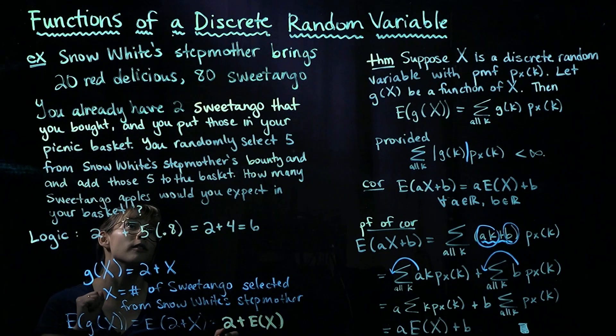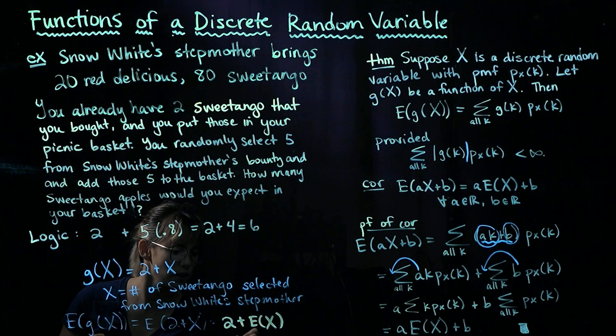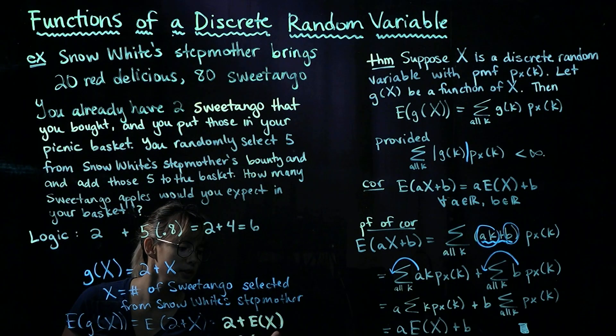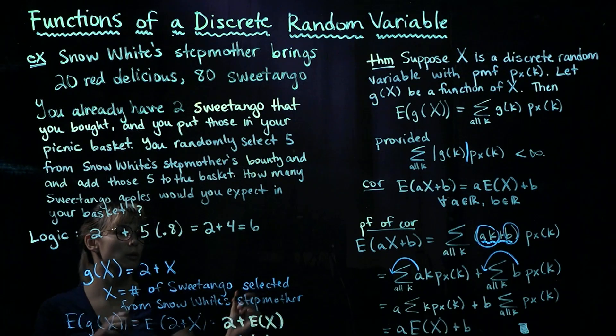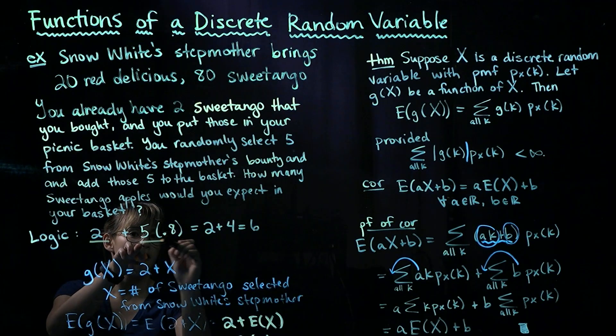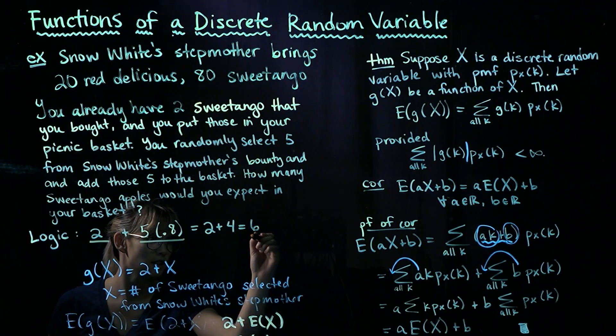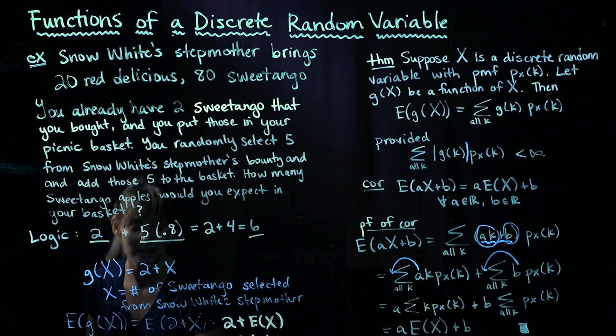And we know that the expected value of hypergeometric is not too difficult to calculate. It's going to be 0.8 times the number of apples that we're drawing, which is 5. So that's why we end up with 2 + 5 times 0.8, which is 6. So we expect to see six Sweetango apples in our picnic basket.